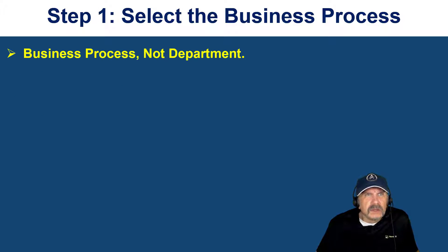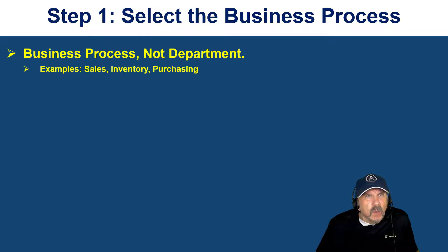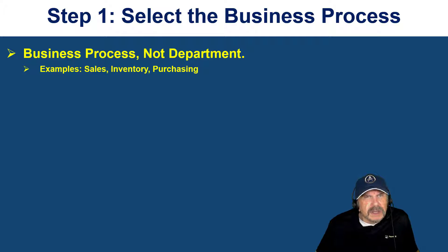Select the business process. It's important to understand that the business process is not the same as a department. Something like sales, inventory, or purchasing — these are really activities, things the business does that drive the business and ultimately spend money or make money. That's generally the kind of thing you're going to want to focus on, not a department like HR or accounting. It's more the process. And if you think about it, something like sales is a good example because it spans many departments.